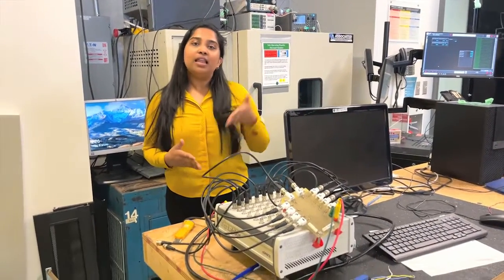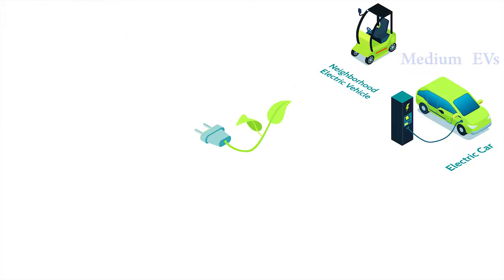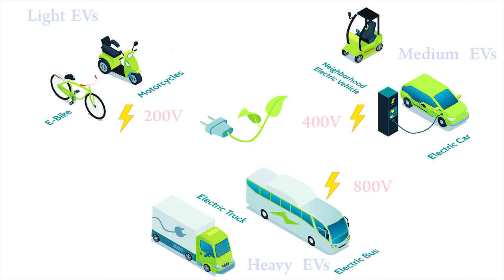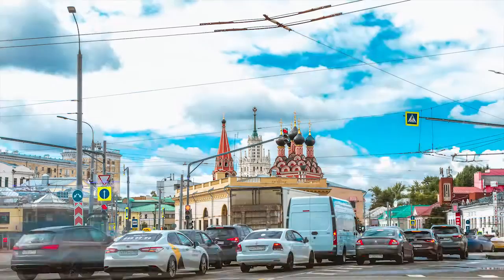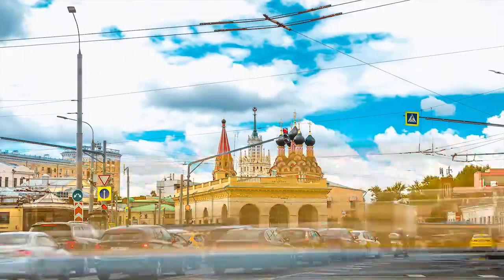The electric vehicles can be categorized into three clusters according to their battery sizes: light EVs, medium EVs, and heavy EVs. Also, the charging voltages are different from each other. The futuristic EV charging stations should be capable of catering to all categories of EVs.